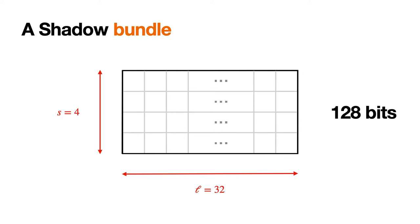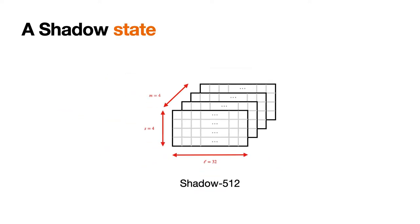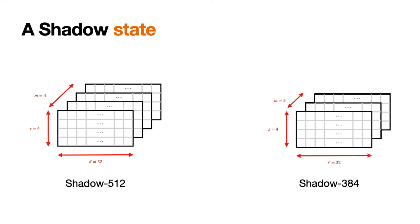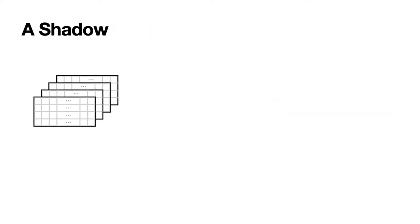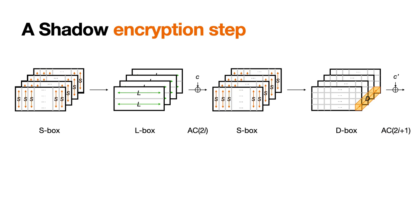Let's talk about Shadow first. Shadow combines bundles. A bundle is a 4 by 32 array of bits, so 128 bits in total. If you combine 4 of them, you get a Shadow state for Shadow 512. For the smaller version, Shadow 384, you only need 3 of them.